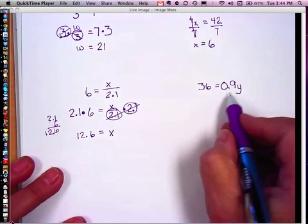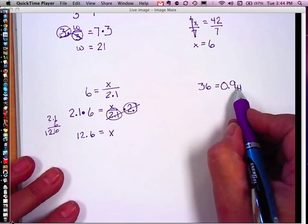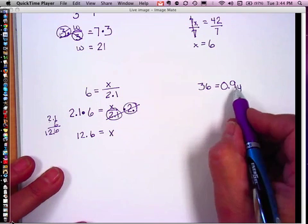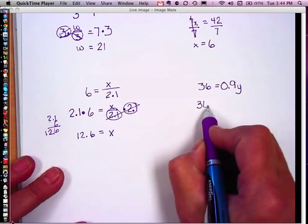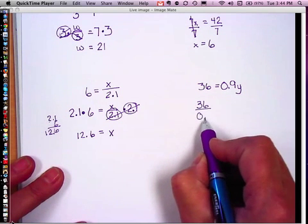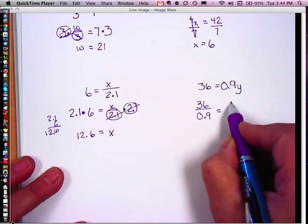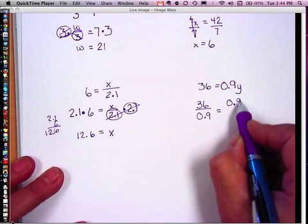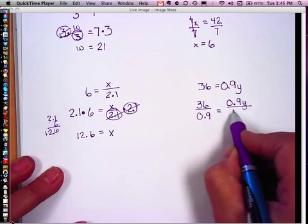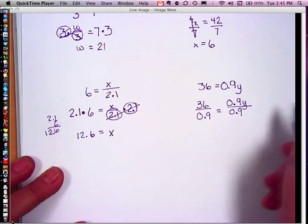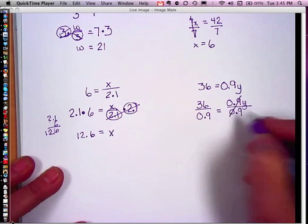On our last problem, I see that I'm multiplying. So in order to undo that multiplication, I'm going to divide. So I'm going to take the left side, 36, divide it by 9 tenths. Take the right side, 0 and 9 tenths y, and divide it by 9 tenths. I see 9 tenths divided by 9 tenths is 1.